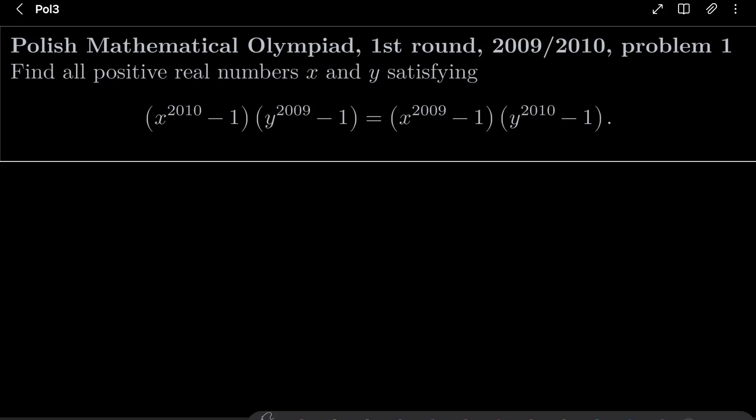Hello friends, in this video I'd like to solve the following problem from the Polish Mathematical Olympiad first round 2009, problem number 1. We wish to find all positive real numbers x and y satisfying the following equation: x^2010 - 1 times y^2009 - 1 equals x^2009 - 1 times y^2010 - 1.